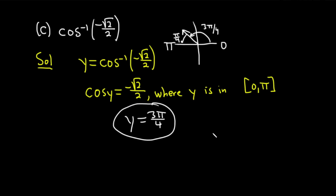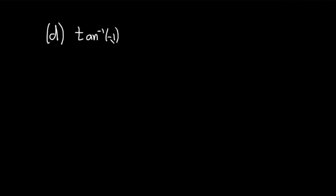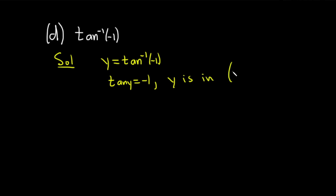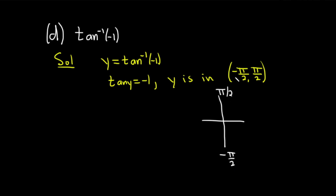That is between 0 and π. Let's do another example. Part D: we have tan inverse of negative 1. Just like before, set it equal to y. So y equals tangent inverse of negative 1, meaning tangent of y equals negative 1, where y is in the open interval (−π/2, π/2). On the unit circle, that covers those two quadrants, and the answer is y equals negative π/4.